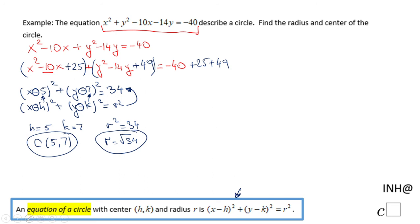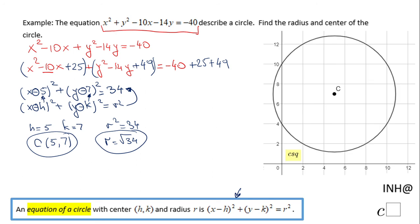We cannot simplify that radical. And this is the center and the radius. You can see the picture here also. You notice that center, which is (5, 7).